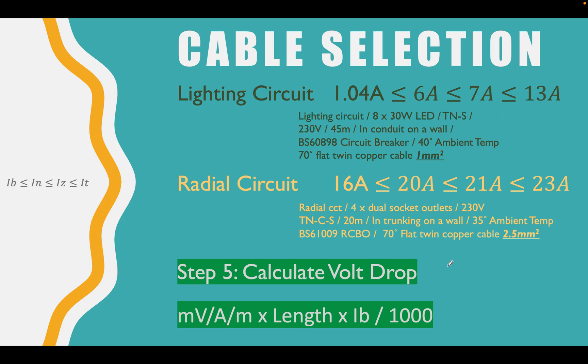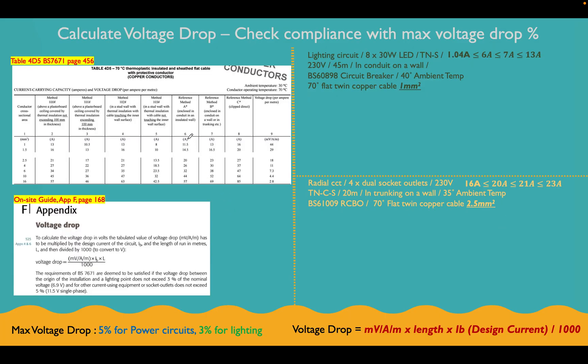So now let's move on to the next slide and we'll go through voltage drop. Okay, so you'll notice this is the same table that we just selected our cable sizes from. This is table 4D5 for 70 degree thermoplastic insulated and sheathed flat cable, which is what we're using for both of these circuits. This is from table 4D5 in BS 7671, the big brown book. We've also got this down here from the on-site guide, the appendix F, which is a bit of information about voltage drop.